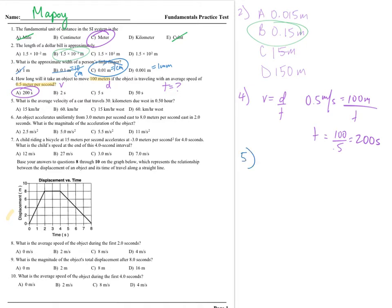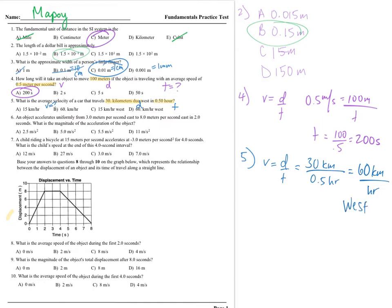Number five: what is the average velocity of a car that travels 30 kilometers due west in 0.5 hours? We have our distance D and our time T, and we're looking for average velocity V. Same formula, plug and chug — solving for V: 30 kilometers divided by 0.5 hours gives you 60 kilometers per hour. What direction? We're going west — so 60 kilometers per hour west. That's choice D.